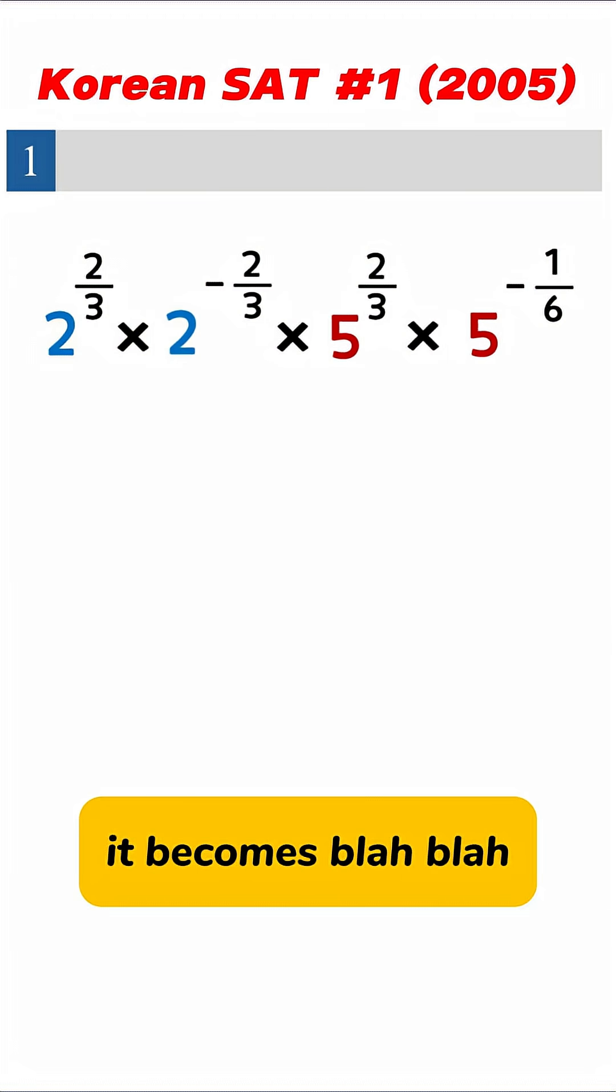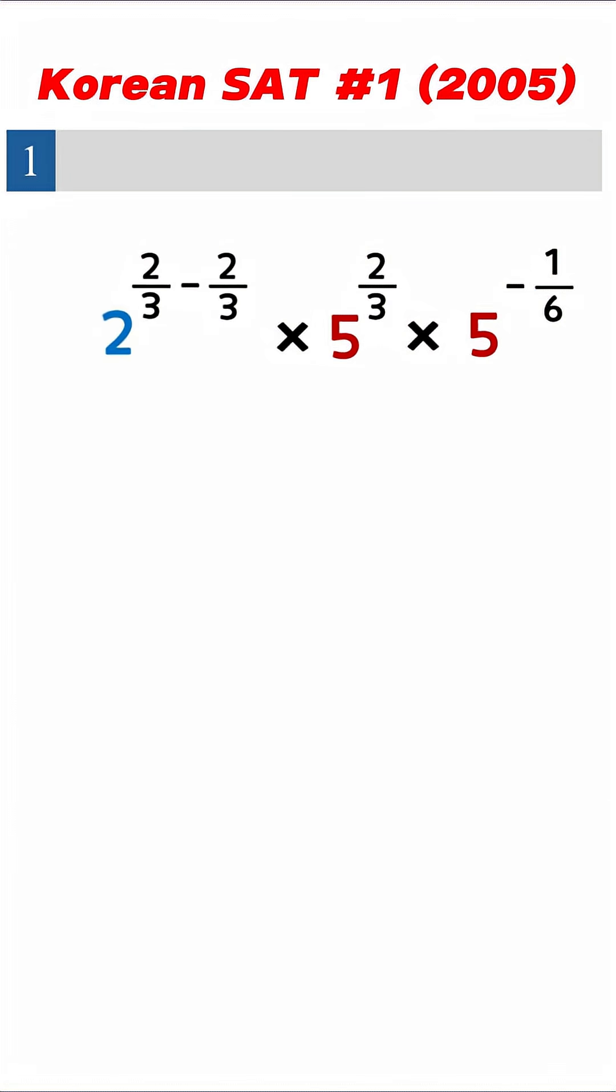For the base 2 part, it becomes 2 to the power of 2 over 3 minus 2 over 3. For the base 5 part, it becomes 5 to the power of 2 over 3 minus 1 over 6.